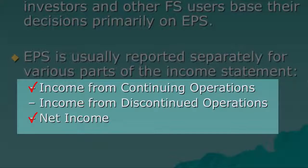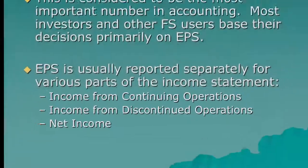For our examples we're going to focus on just the net income earnings per share number, but be aware you really should have both income from continuing operations and net income. The calculation is the same for all three options — the only difference is which income number you put into the equation.